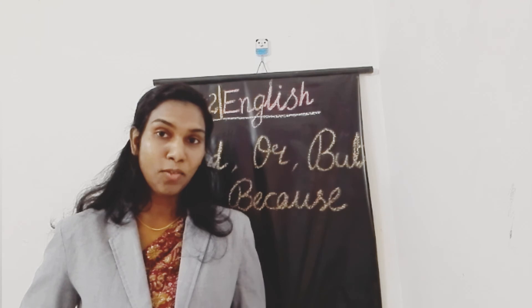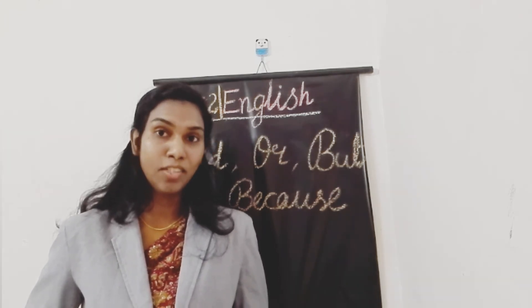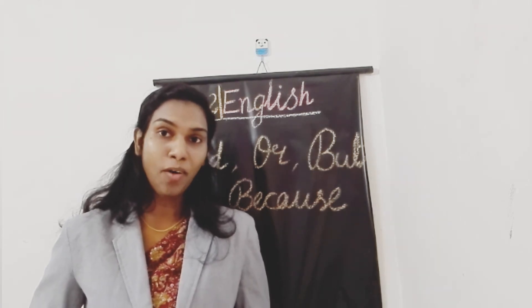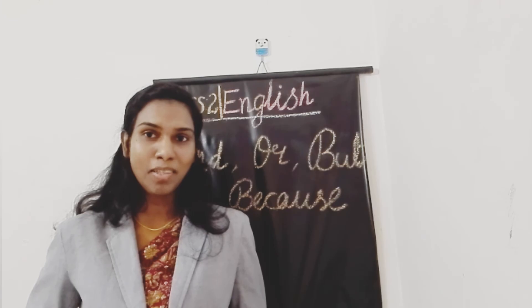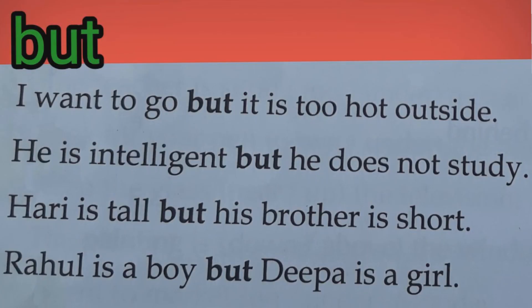Now let's learn the use of the word 'but.' 'But' is also a connecting word — a joining word — which makes a contrast between two words or two sentences. The word 'but' is used to connect sentences with unlike ideas. For example: I want to go but it is too hot outside. He is intelligent but he does not study. Hari is tall but his brother is short. Rahul is a boy but Deba is a girl.